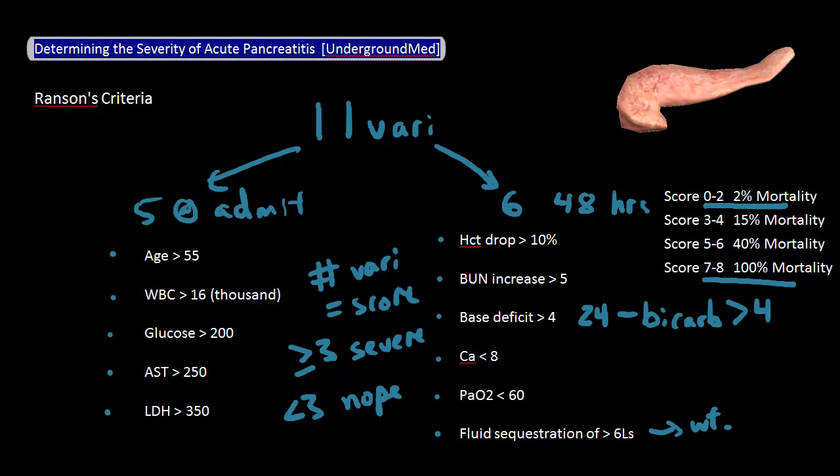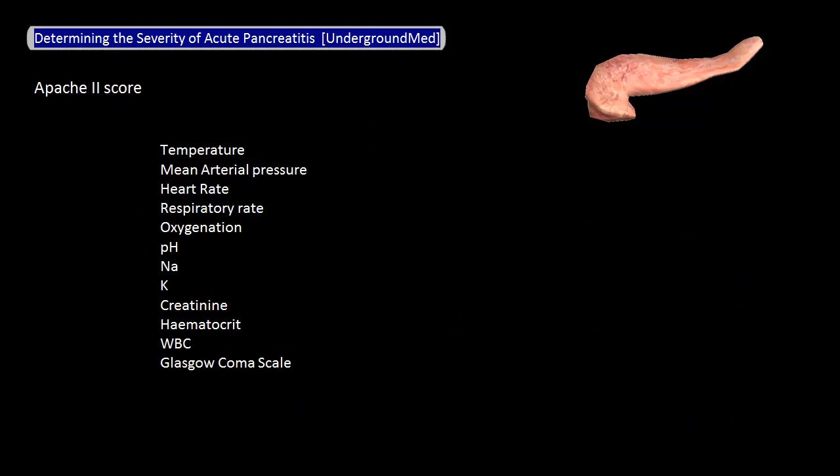As you can see, Ranson's criteria is a little bit cumbersome to use, especially because you have to wait 48 hours. How good of a tool it is has also been called into question, but it's probably important to know because it's the first one created and the one you'll likely hear about first, and it's actually not that cumbersome compared to some of the other ones out there. The second one we'll cover is the APACHE 2 score.